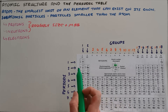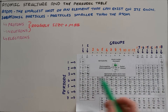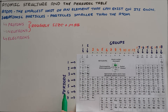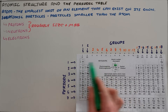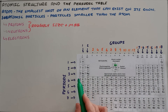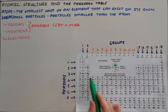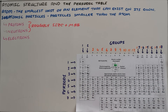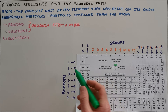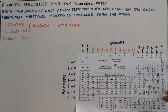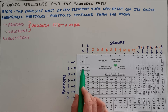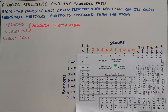The rows on the periodic table are referred to as periods. For example, hydrogen and helium are in the first period, and sodium, magnesium, and aluminium are in the third period. The number of periods also corresponds to the number of energy levels in an atom, so an element in period one has one energy level, and an element in period two has two energy levels, and so on.